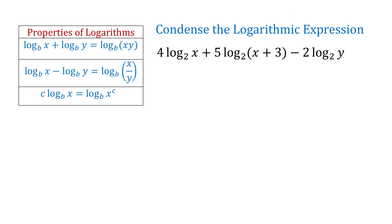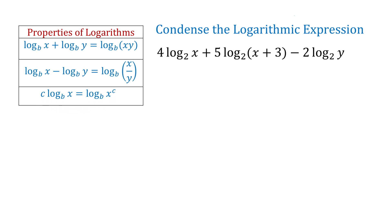And with the power rule, we write c times log base b of x as log base b of x to the power of c. With this property, we take the coefficient of the logarithm and write it as the exponent of x.